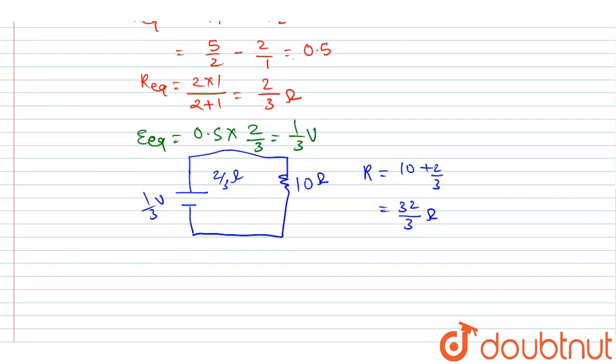By I = E_equivalent/R formula, E_equivalent is 1/3 and R_equivalent is 32/3, so the current I will be 1/32 ampere. And this will be the answer. So simple.